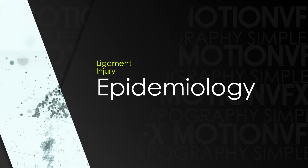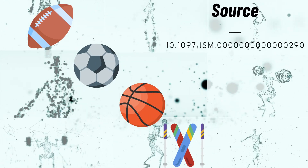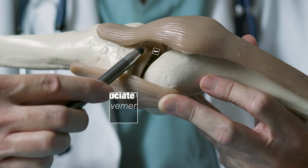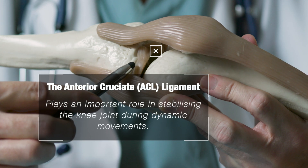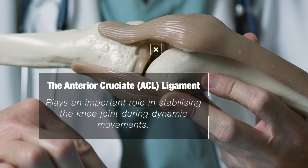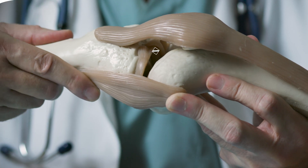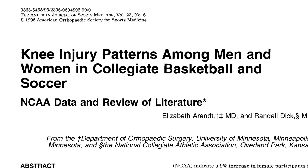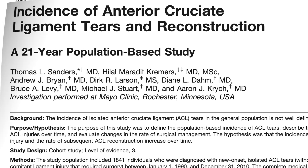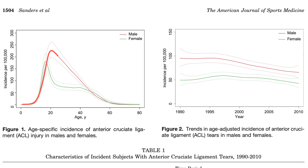Broadly speaking, when it comes to specific sports, American football, soccer, basketball and skiing are among the highest risk activities for ligament injuries. Female athletes also tend to have a higher risk of certain ligament injuries, particularly of the anterior cruciate ligament, or ACL. Studies have shown that female athletes have a two to eight times greater risk of suffering an ACL injury compared to their male counterparts in similar sports.